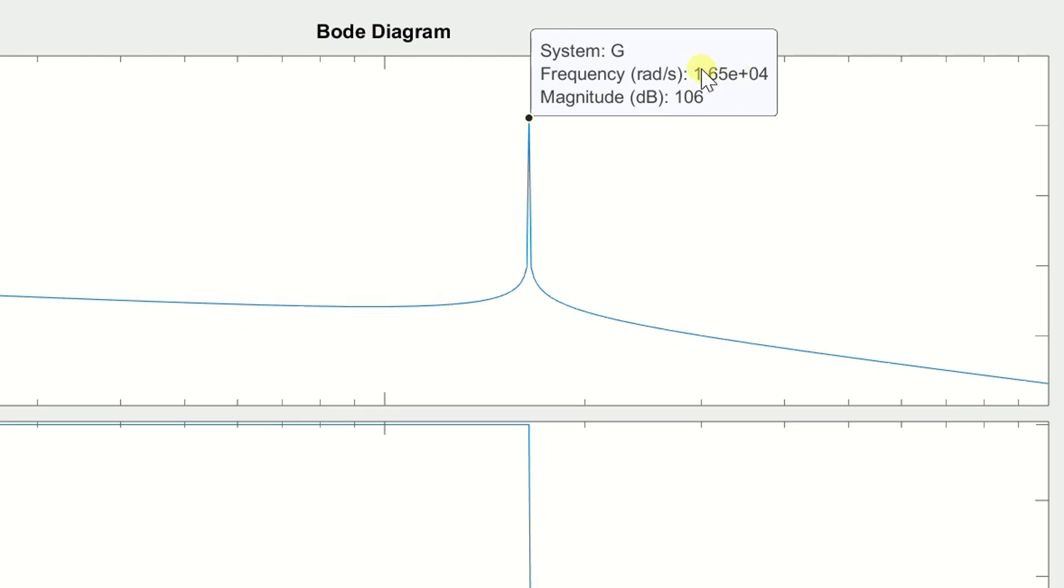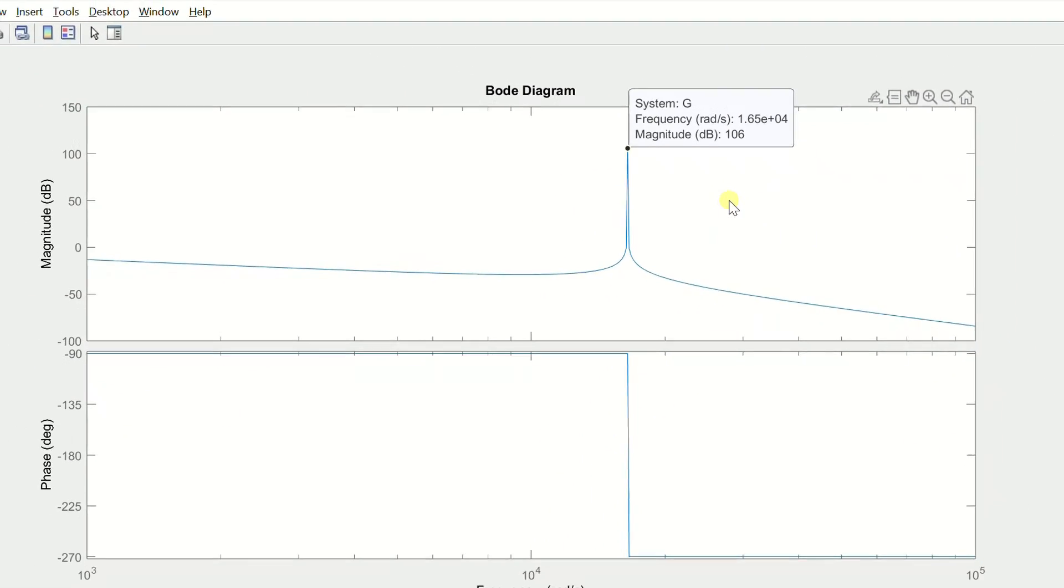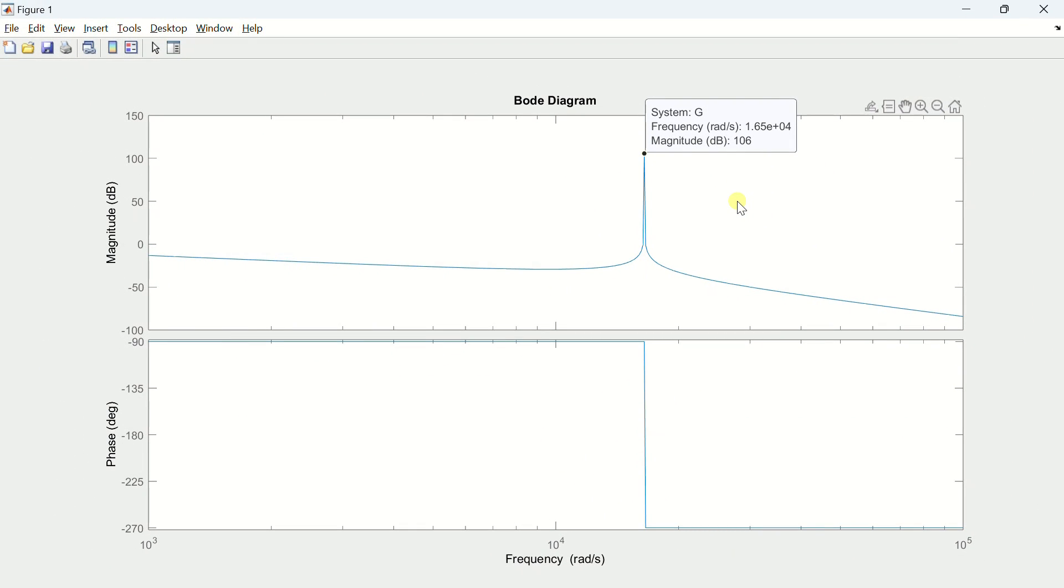This phenomenon is attributed to the resonance characteristic of the LCL filter. At this particular frequency, the impedance imposed by the filter on the grid current is minimal, leading to a substantial increase in the magnitude of the grid current.